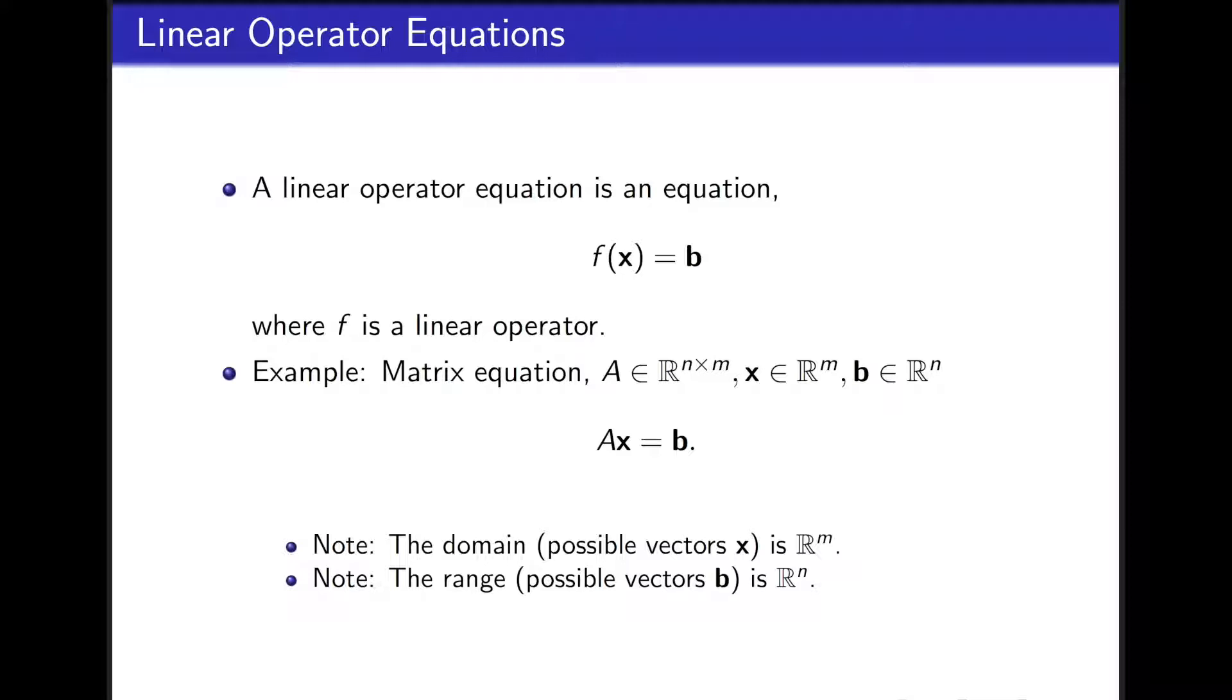While the range, the space of all possible outputs, is R^n. So outputs for this linear operator equation represented by b. Therefore, all possible b vectors are going to live in R^n.